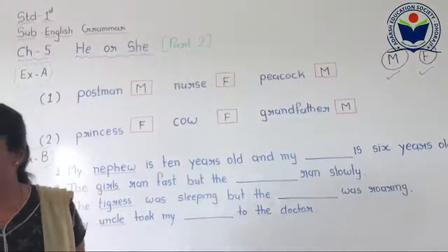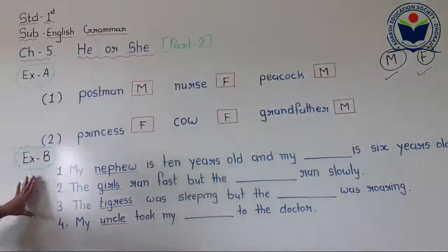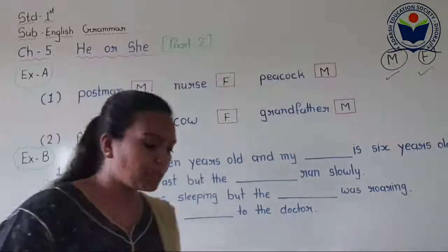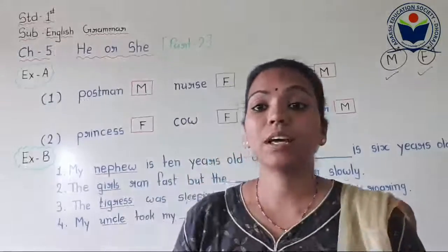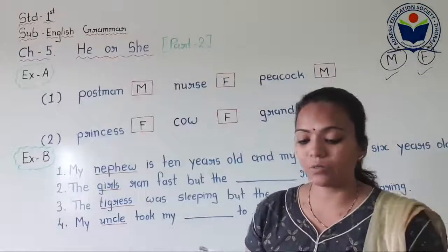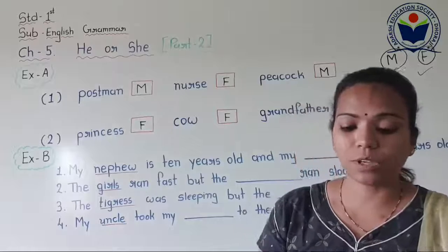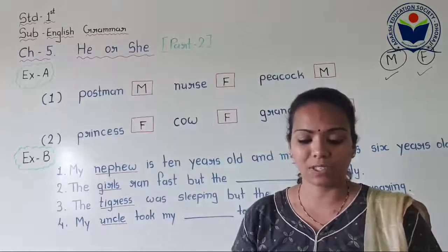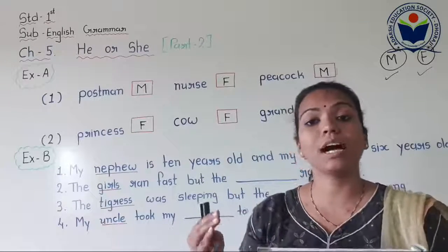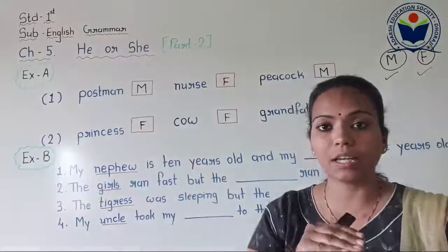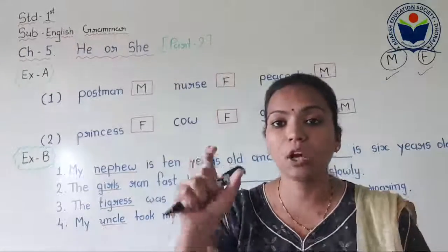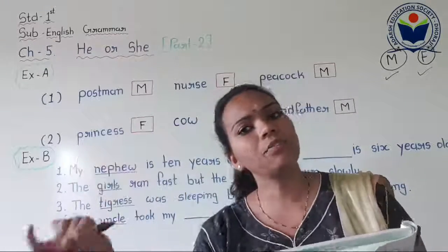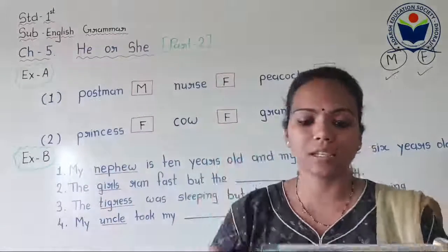Now we will start our next exercise. Are you ready? Exercise B. First, we will read the heading. Look at the underlined words and fill in the blanks with the opposite male or female word. If the underlined word is male, you have to write its opposite — which means female, and if female, then male. Very simple.